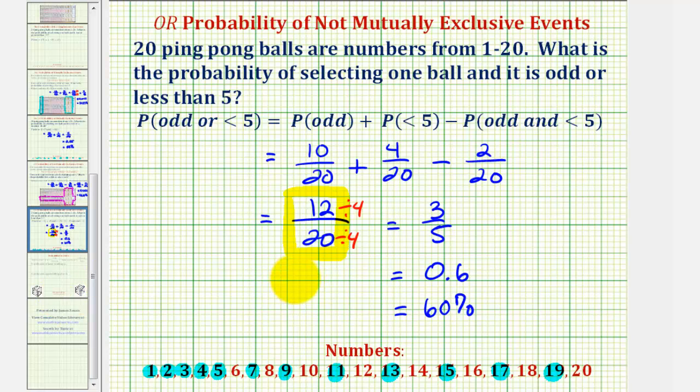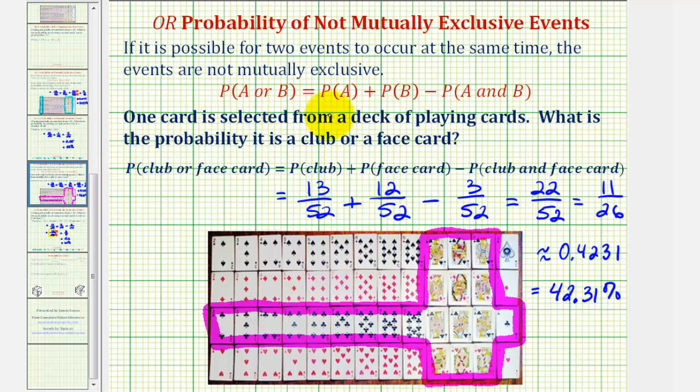Because these two examples are pretty straightforward, we could probably just count the favorable number of ways that these events could occur, but it's also a nice way to understand why we have this special formula when we have events that are not mutually exclusive. I hope you found these two examples helpful.